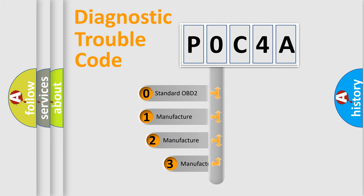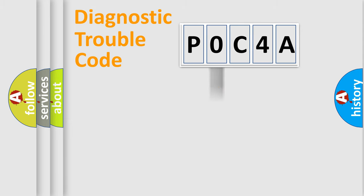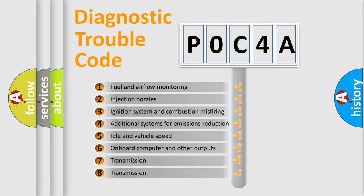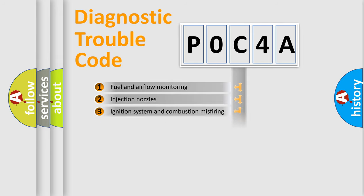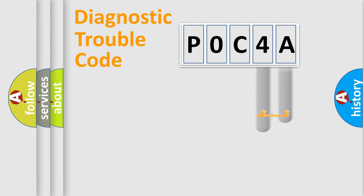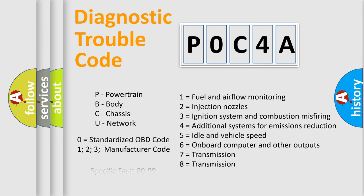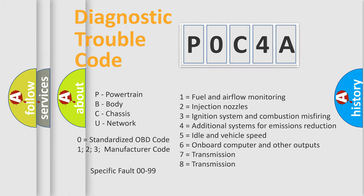If the second character is expressed as zero, it is a standardized error. In the case of numbers 1, 2, or 3, it is a more specific car-specific error. The third character specifies a subset of errors. The distribution shown is valid only for the standardized DTC code. Only the last two characters define the specific fault of the group. This division is valid only if the second character code is expressed by the number zero.